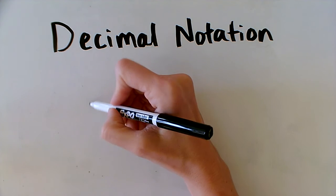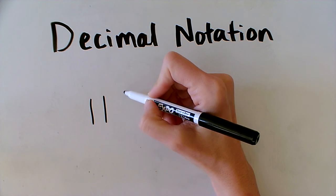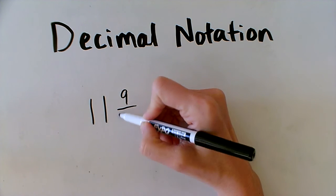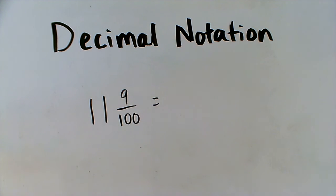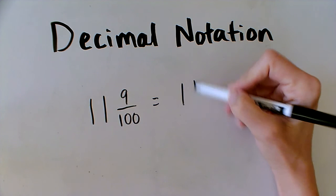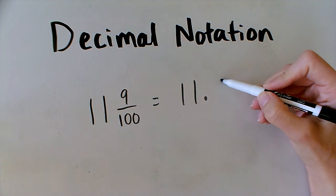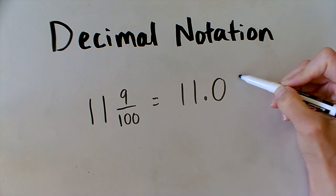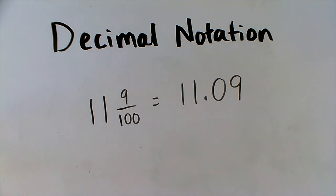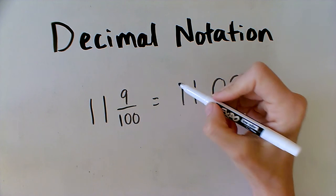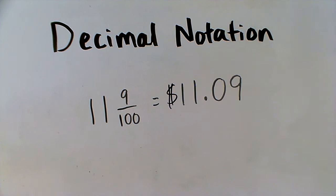Now I have eleven and nine hundredths. So I have eleven before the decimal — that's where the whole numbers are — and then nine hundredths. If I want to write nine hundredths, I have to make sure that the nine ends up in the hundredths place, not the tenths place. So I need zero in the tenths place and nine in the hundredths place. Eleven and nine hundredths is kind of like writing eleven dollars and nine cents.